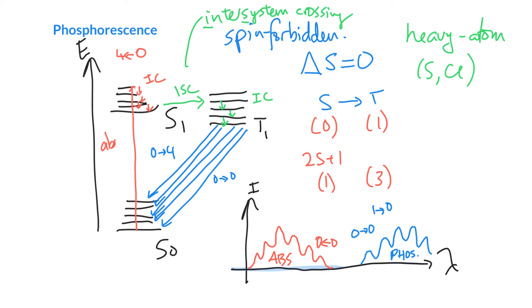Okay, and again, we can calculate the difference between the peak of the absorption and the phosphorescence. And that is called the Stokes shift. And for phosphorescence, it's got a pretty significant Stokes shift.